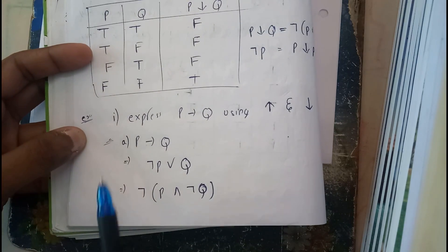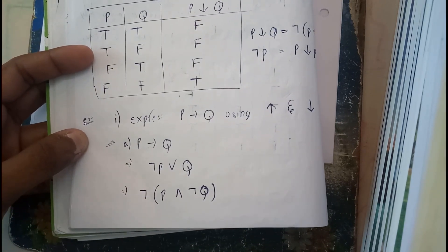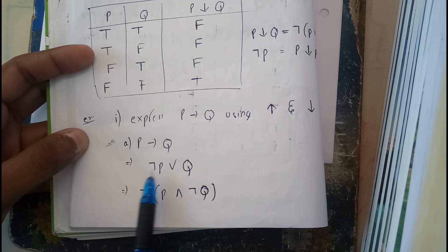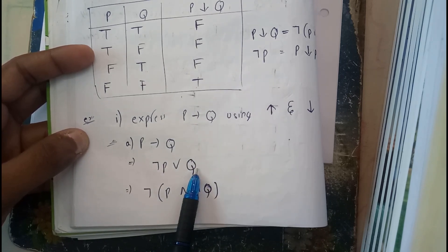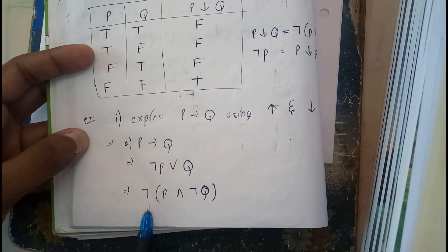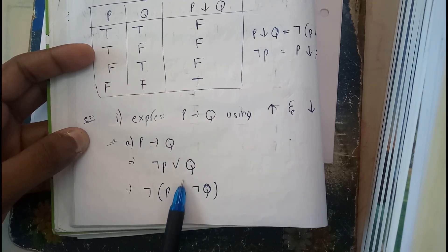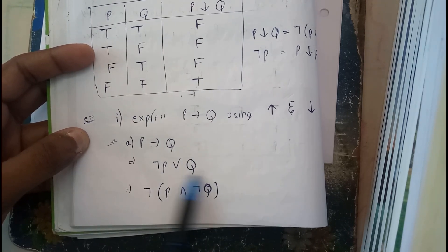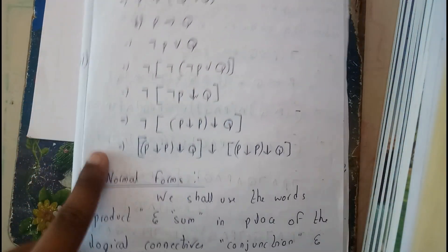You can express any kind of statement in terms of these two. P implies Q you'll be writing as negation of P OR Q, so applying negation for this: negation of P OR negation of Q. So this is P upper arrow negation of Q.